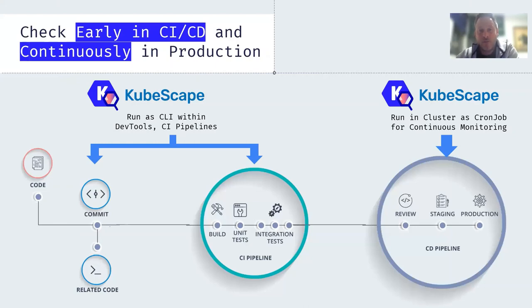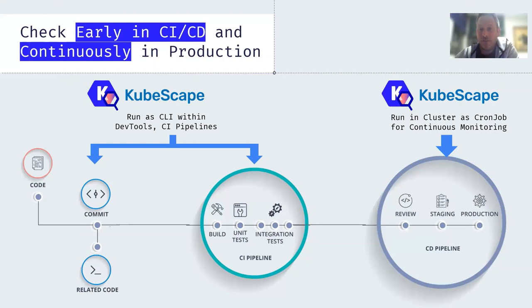When you put KubeScape in your CI/CD, it runs as a CLI within your existing DevOps tools. We have integrations with GitHub, GitLab, Jenkins, CircleCI, and all the different pipelines and tools available. You can also put KubeScape as a cron job in a simple namespace in your clusters for continuous monitoring — it will wake up, do the scans, continuously identify whether drifts are happening, and give you results over time.